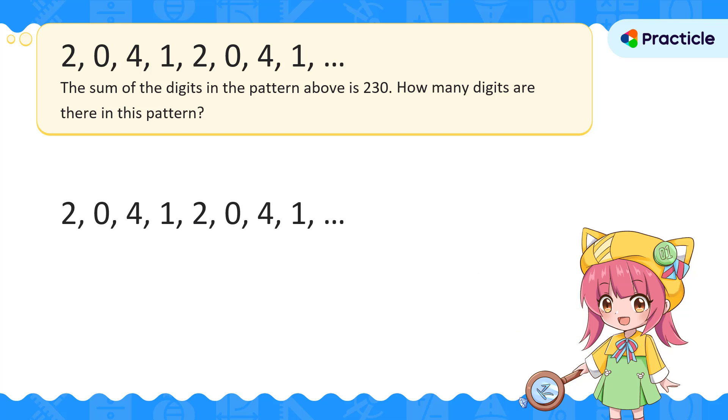This means that we can put the digits 2, 0, 4, and 1 in a group. This is the group that will repeat in the pattern. Great! How does putting these digits in a group help us?